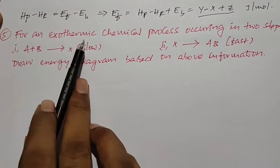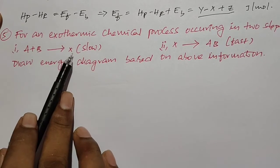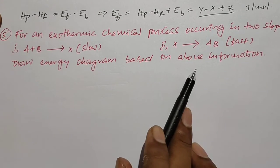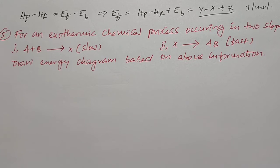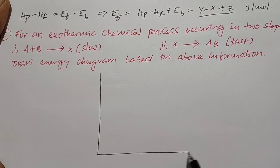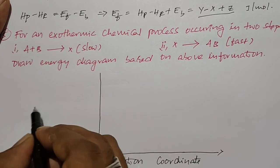This is the next and last problem. For an exothermic chemical process occurring in two steps: A + B → X (this is the slow step), and X → AB (this is the fast step). Draw an energy diagram based on the above information. The first information is that the given energy diagram is for an exothermic reaction. On the x-axis I take the reaction coordinates, and on the y-axis I take the energy.